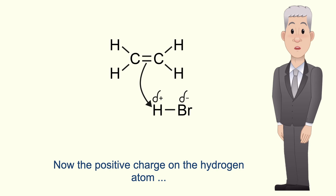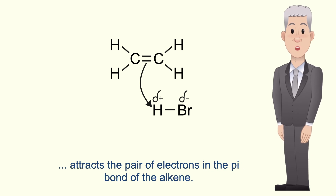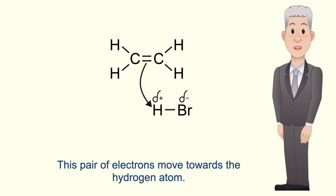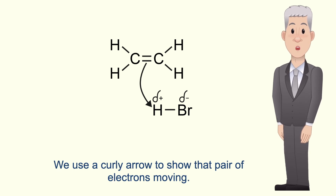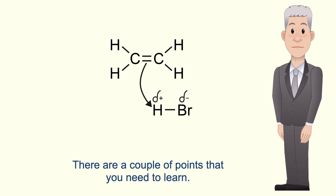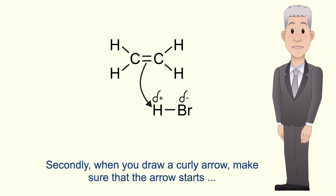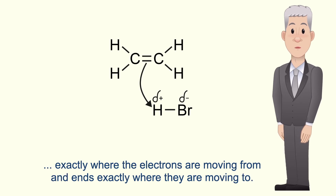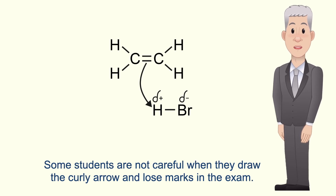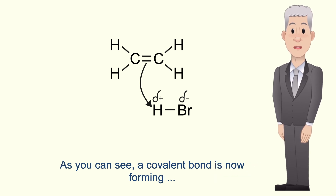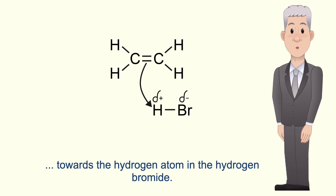The positive charge on the hydrogen atom attracts the pair of electrons in the pi bond of the alkene. This pair of electrons moves towards the hydrogen atom, and we use a curly arrow to show that pair of electrons moving. Remember that a covalent bond is a pair of electrons. When you draw a curly arrow, make sure that the arrow starts exactly where the electrons are moving from and ends exactly where they're moving to. Some students are not careful when they draw the curly arrow and lose marks in the exam. A covalent bond is now forming towards the hydrogen atom in the hydrogen bromide.